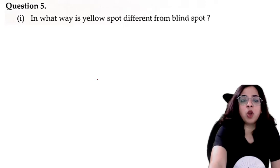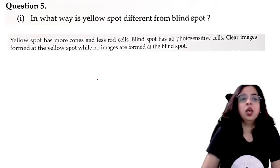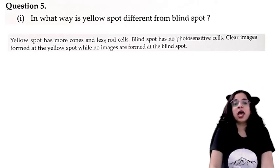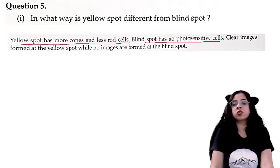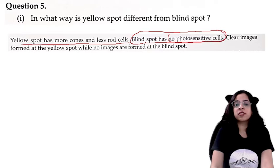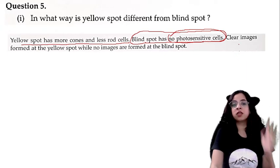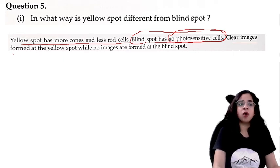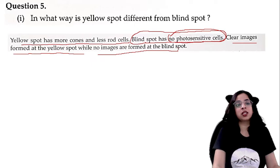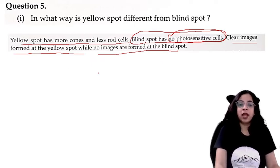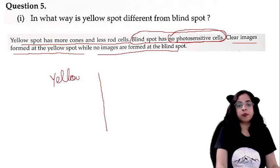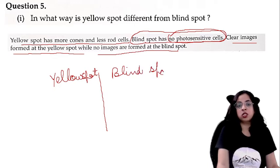In what ways is the yellow spot different from the blind spot? Yellow spot has more cone cells and fewer rod cells. Blind spot has no photosensitive cells at all — that is why it is called the blind spot; even if light falls on it, you cannot see. Clear images are formed at the yellow spot, while no images are formed at the blind spot. It is recommended to present this as a column comparison with 'yellow spot' and 'blind spot' as headings.